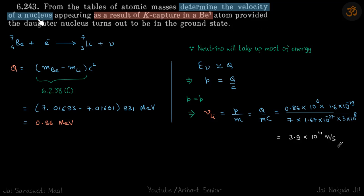We need to find the velocity of the nucleus, so velocity of Li. So here this is a wave, neutrino is a wave, and this is a particle.